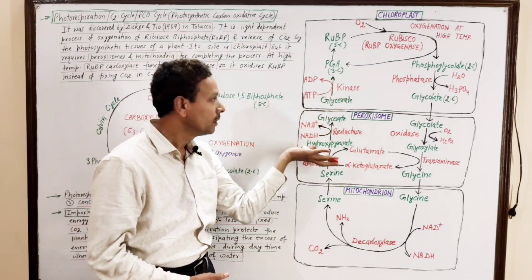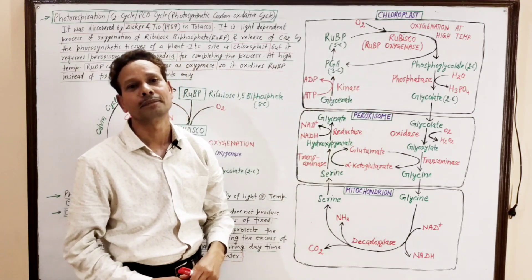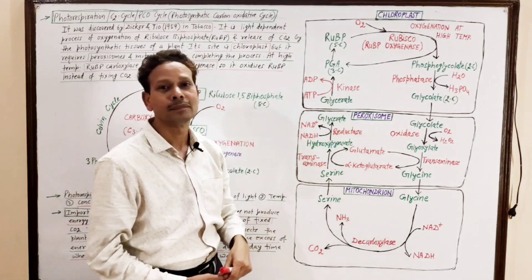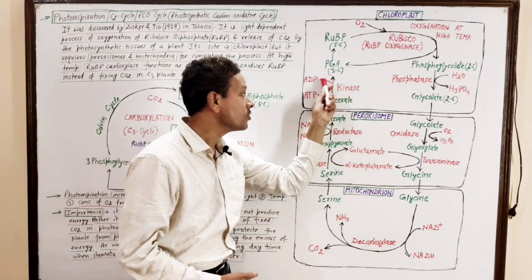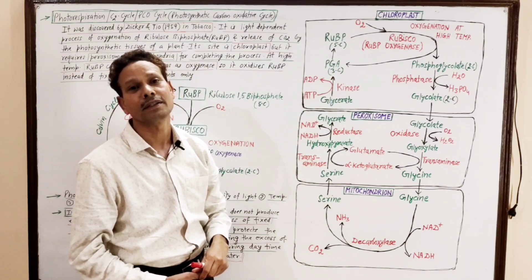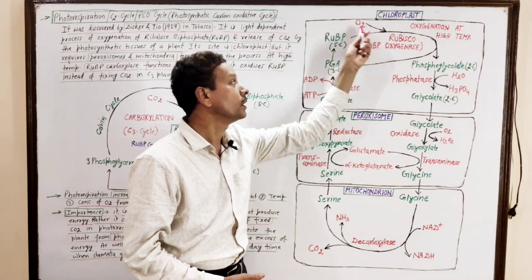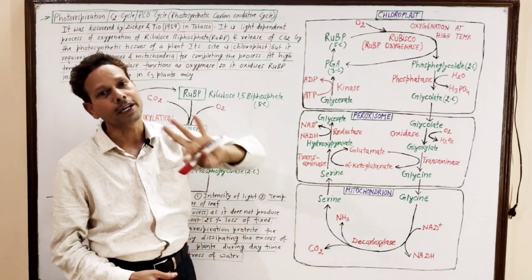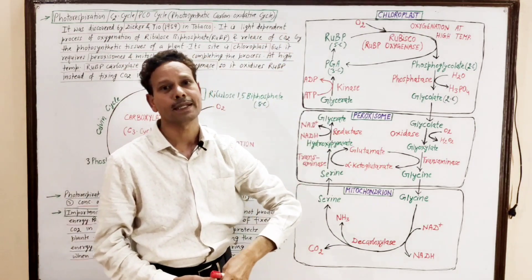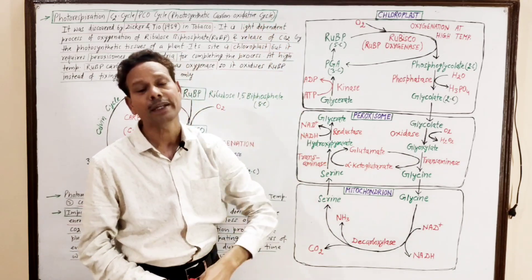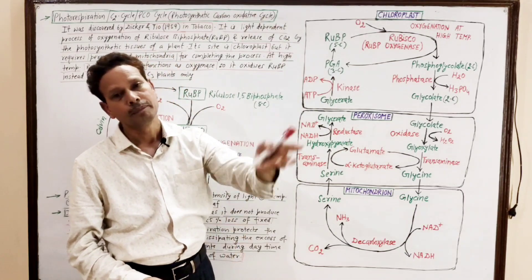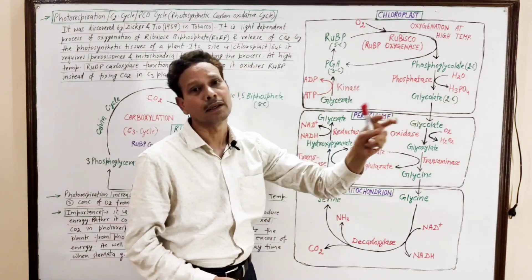This glycerate enters the chloroplast in mesophyll tissues. Here, in the presence of ATP, and catalyzed by a kinase enzyme, glycerate produces phosphoglyceric acid to regenerate RUBP. The Calvin cycle then starts again when conditions return to favorable: when temperature decreases, light intensity decreases, and oxygen concentration decreases — the C3 Calvin cycle resumes.